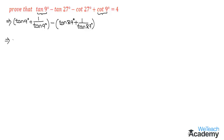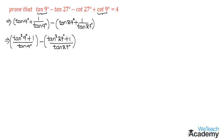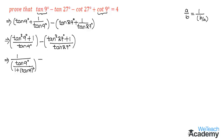By taking LCM we get tan 9 degrees plus 1 divided by tan 9 degrees, minus tan 27 degrees plus 1 divided by tan 27. Using the concept that A over B can be written as 1 divided by B over A (the reciprocal), we get 1 by the reciprocal: tan 9 degrees divided by 1 plus tan squared 9 degrees, minus tan 27 degrees divided by 1 plus tan 27 degrees whole square. Now let us multiply and divide both terms by 2.